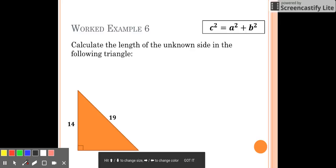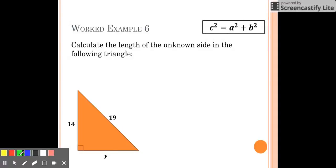In worked example 6, we're going to calculate the length of the unknown side in the following triangle. Let's start by labeling it: the side opposite to the right angle, the hypotenuse, we call C, and the other two sides can be called A or B.